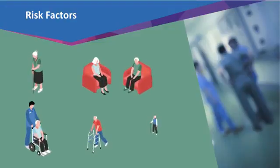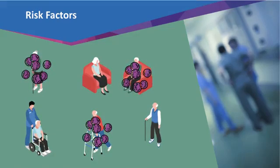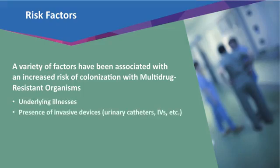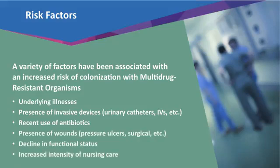Given the high rate of colonization in nursing homes, how is it that some residents become colonized while others do not? When colonized residents are compared to non-colonized residents, a variety of factors have been associated with increased risk of colonization. These include an underlying illness, presence of an invasive device like a feeding tube, IV, or urinary catheter, prior antibiotic use, the presence of wounds, a decline in functional status, and an increased intensity of nursing care.